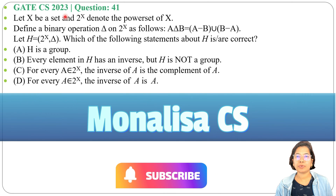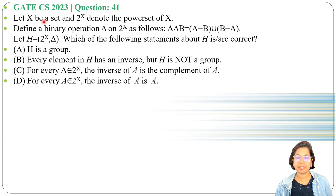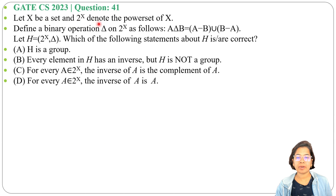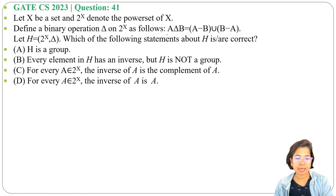Let's discuss a previous question on groups. This question was asked in GATE CS 2023, question number 41. Let X be a set and 2^X denote the power set of X. Define a binary operation delta on 2^X as follows: let H equal to 2^X and binary operation delta. Which of the following statements about H is or are correct? Four options are given.